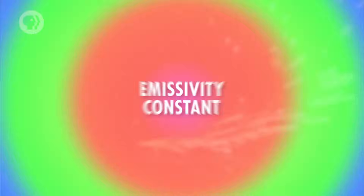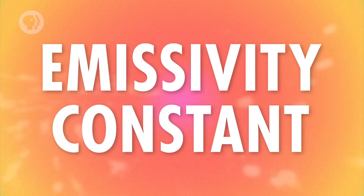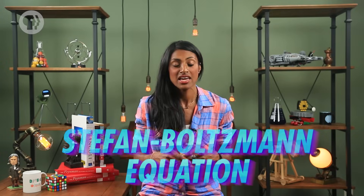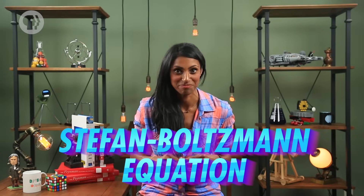So temperature's a big deal when it comes to radiation. But radiation also depends on what's known as the emissivity constant, which is based on a material's inherent ability to radiate heat. The higher the emissivity constant, the more it radiates. The equation that combines all these variables together to describe how much heat an object radiates over time is called the Stefan-Boltzmann equation.